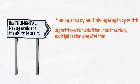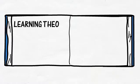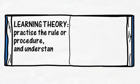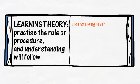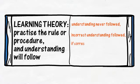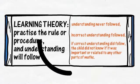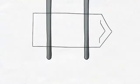Unfortunately, the instrumental approach to teaching and learning maths is widespread. The learning theory was that children practice the rule or procedure and understanding will follow. Current learning research tells us that in many cases understanding never followed, incorrect understanding followed, or if correct understanding did follow, the child did not know whether it was important or related to any other parts of maths.